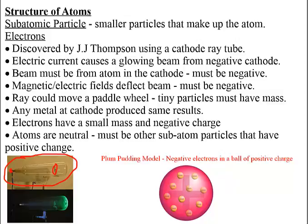It didn't matter the metal. It didn't matter what kind of gas he put inside. A couple of things were really important: one, a paddle wheel could actually be moved, so that told him that these particles had mass. Since the beam came from the negative side, it must have been negative particles. Also, if you moved a negative thing near the beam, it moved away.